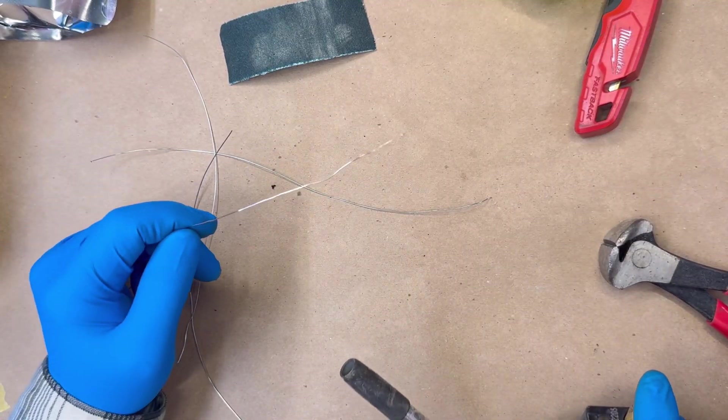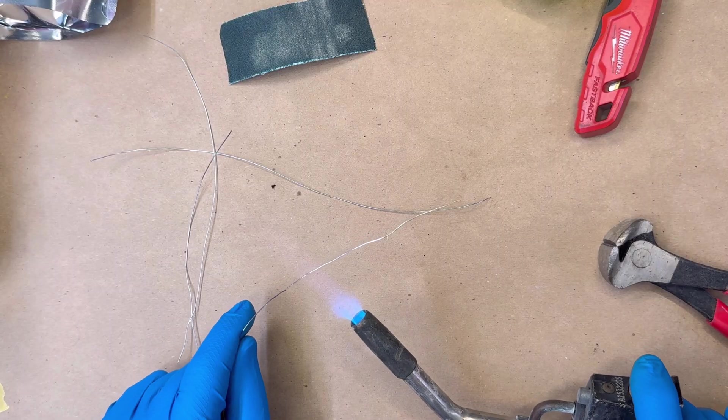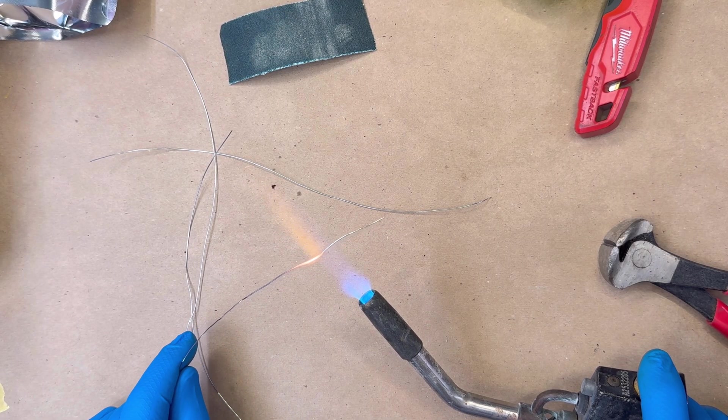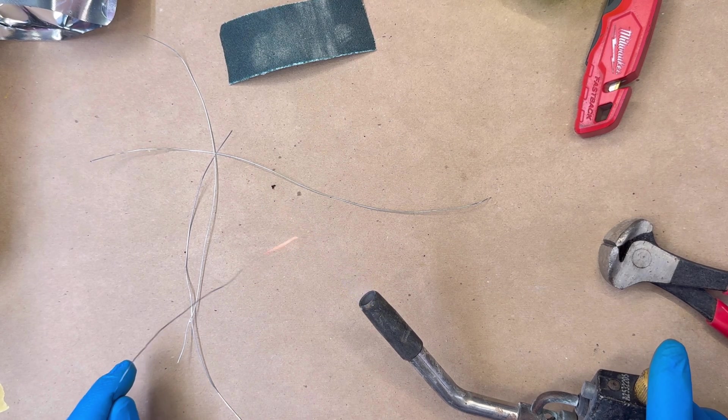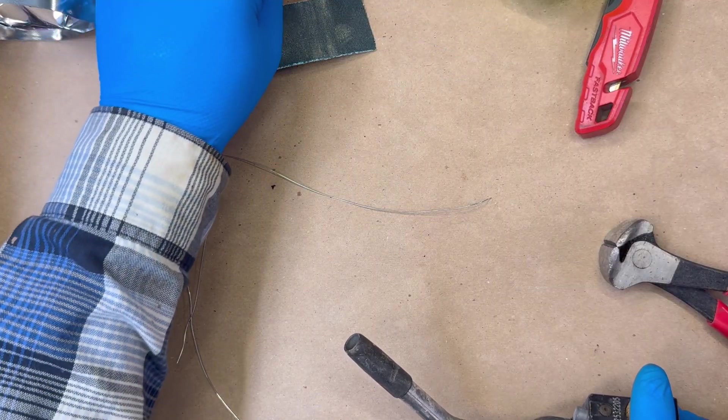I like to torch the end of this just to, if there's any coating on the wire, this ensures that there is no more coating on that wire.